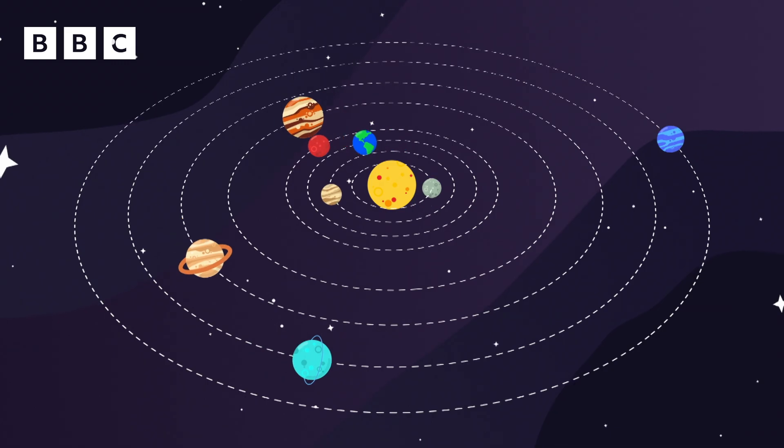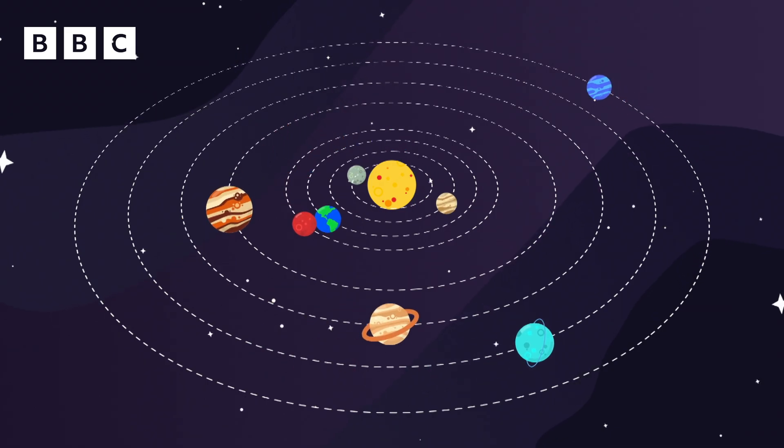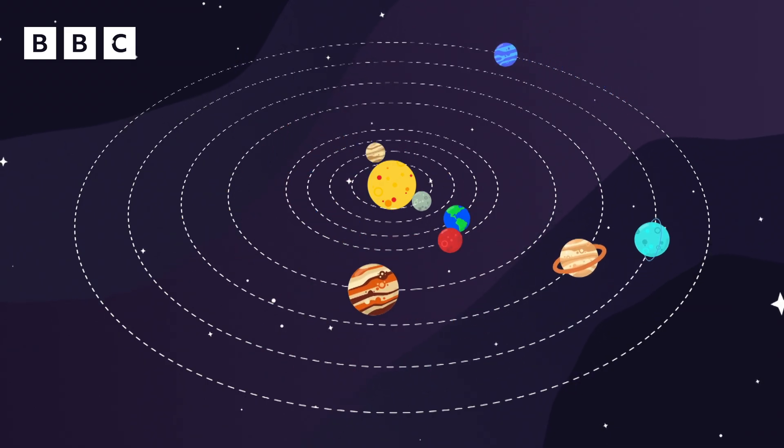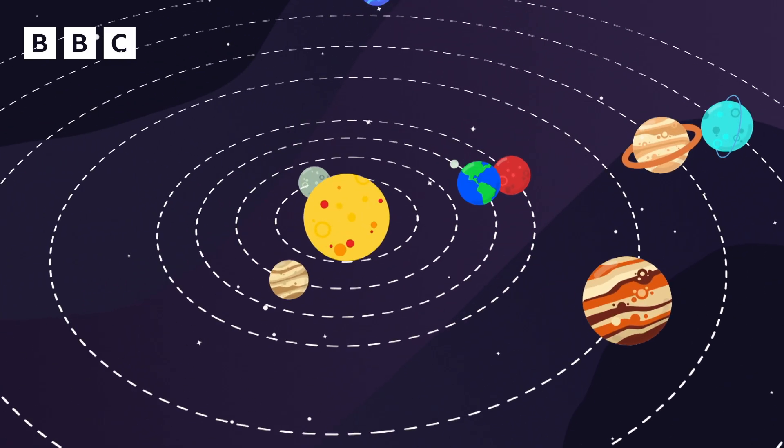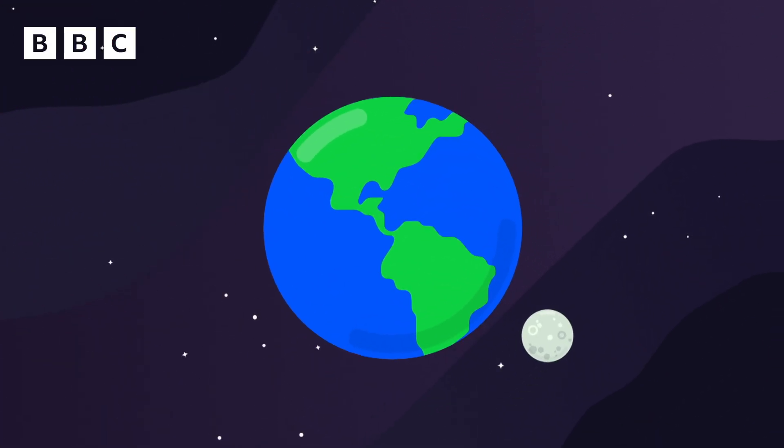Gravity is what holds the Earth and other planets in their paths, or orbits, around the sun. And gravity is also what keeps the Moon in its orbit around the Earth.